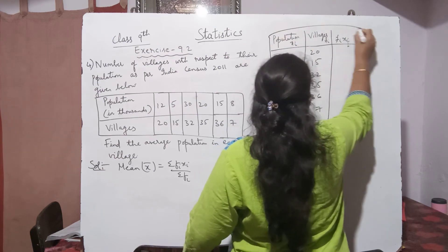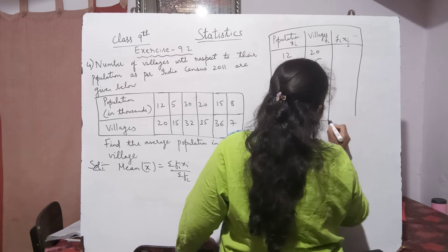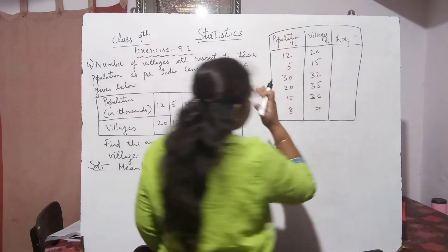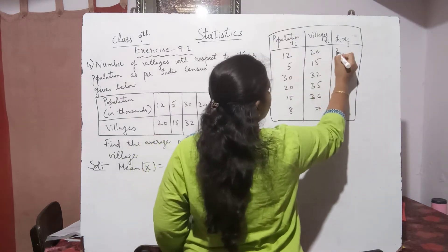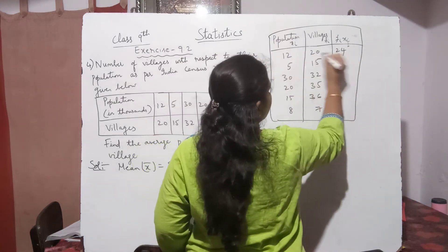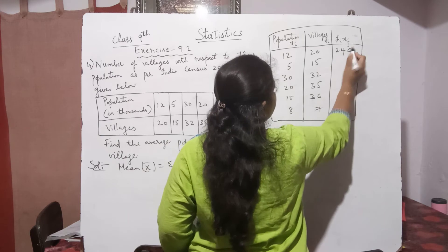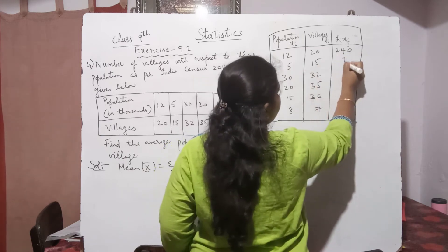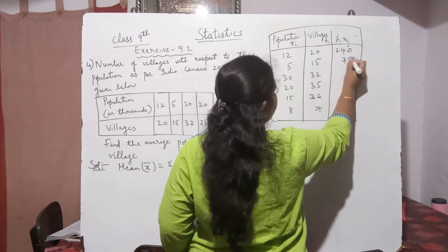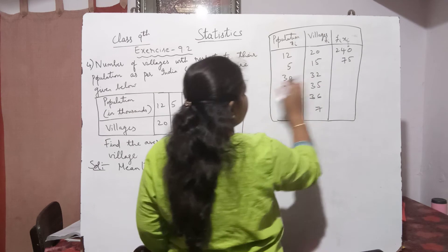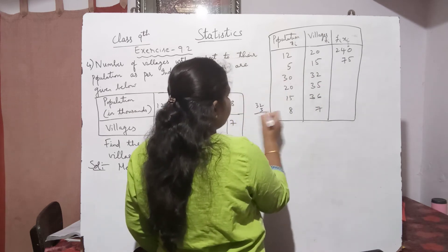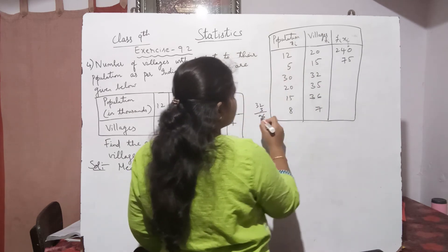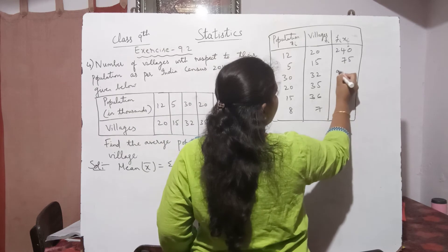Multiply each fᵢ by xᵢ to get fᵢxᵢ. So: 20 × 12 = 240, 15 × 5 = 75, and 32 × 30 = 960.